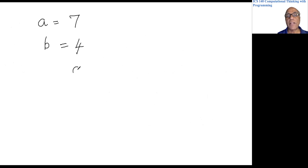If you write a slash b and store it in c, this would divide a by b. So seven divided by four, let me tell you it is going to be one point seven five. So c would be one point seven five.